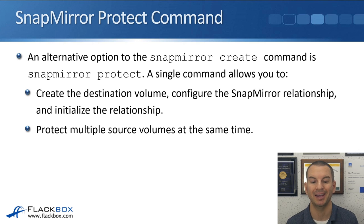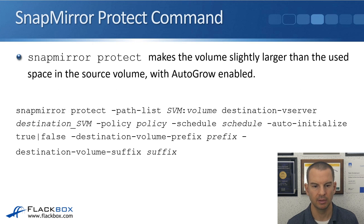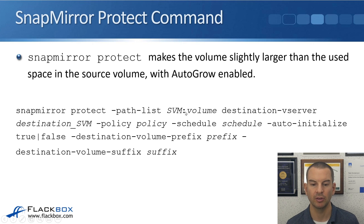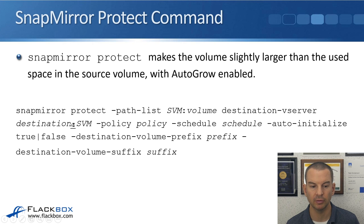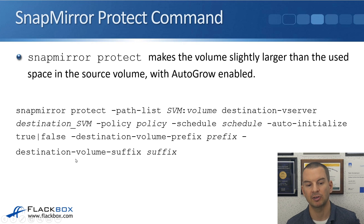With the SnapMirror protect command you can also protect multiple source volumes at the same time with a single command — you cannot do that with the SnapMirror create command. With SnapMirror protect you specify the path list using the SVM and volume, and this acts as a wildcard. So if we had three volumes named vol1, vol2, and vol3, I could specify the SVM and then vol and that will match all three. You specify the destination Vserver, SnapMirror policy, the schedule, and auto-initialize if you want to do the initial baseline transfer as part of this command. You can also specify a destination volume prefix and/or destination volume suffix.